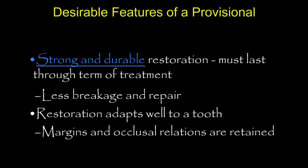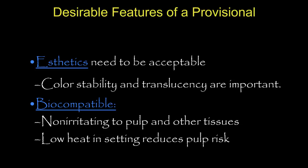Desirable features: we want something strong and durable — it must last at least through the treatment term. Breakage costs money and is a huge inconvenience. We want margins and occlusal relationships maintained. Aesthetically, we want something color-stable with some translucency for anterior regions. It should be biocompatible — not irritating to tissues or the pulp — and when it sets, it ideally produces little to no heat.